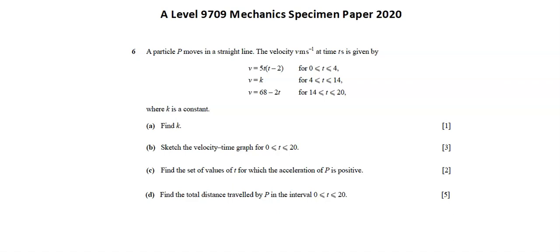Requirement A, find k. Requirement B, sketch the velocity time graph for 0 is less than or equal to t is less than or equal to 20.